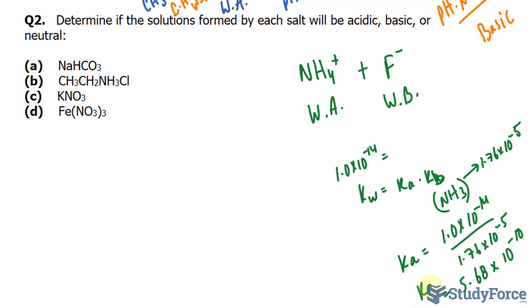So we now have Ka and we'll be comparing this to Kb. Whichever one is greater, that determines whether it's acidic or basic. So let's do this exact same thing for the fluorine anions.